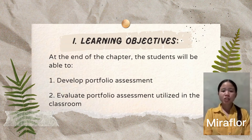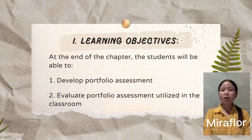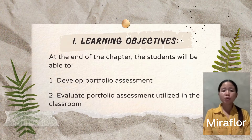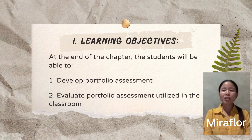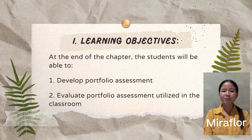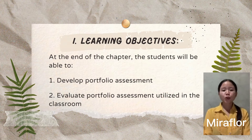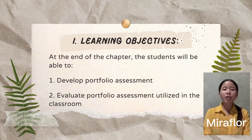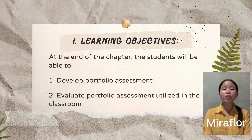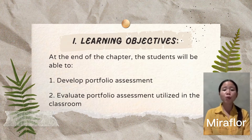Before we proceed to the discussion proper, allow me to read the intended learning outcomes. At the end of the chapter, you should be able to: first, develop Portfolio Assessment; and second, evaluate Portfolio Assessment utilized in the classroom. This chapter describes the processes in planning and implementing Portfolio Assessment. Since you already know the nature of Portfolio Assessment, its purposes, types, and other components discussed by the previous group, we will clarify the steps in designing and evaluating Portfolio as an assessment tool.